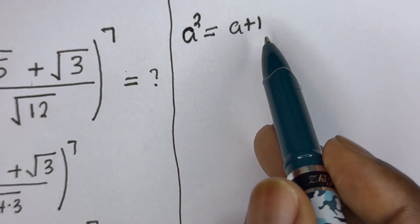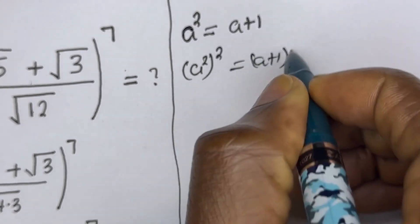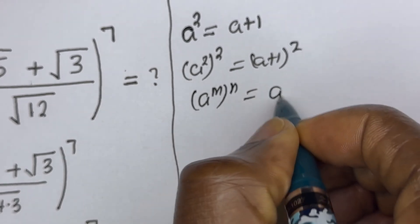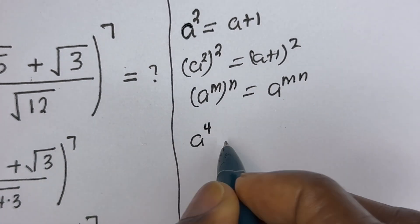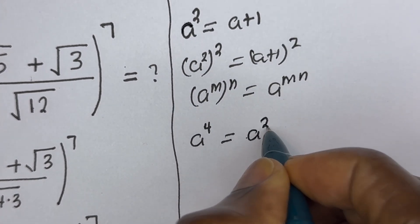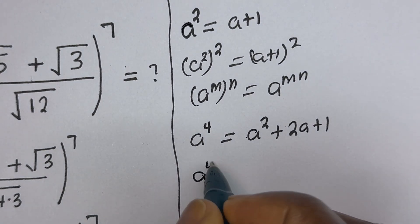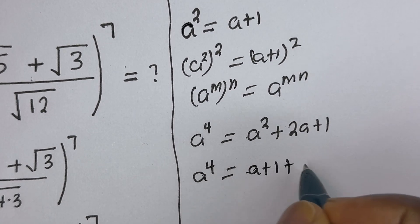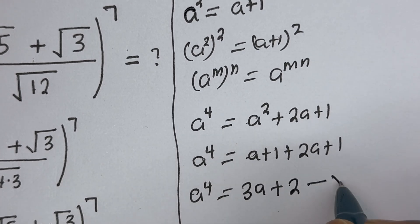Since a² equals a plus 1, let's square both sides again. Using the rule (a^m)^n = a^(mn), we get a⁴ equals (a + 1)² which expands to a² plus 2a plus 1. Substituting a² = a + 1, we get a⁴ equals a plus 1 plus 2a plus 1, that is 3a plus 2. Let's call this equation double star.